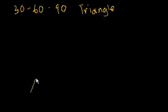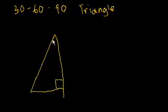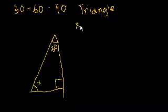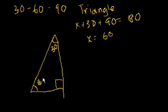Let's say I have a right triangle. That's the right angle. If I tell you that this is a 30-degree angle, we know the angles in a triangle must add up to 180. So if this is 30 and this is 90, the remaining angle x satisfies x plus 30 plus 90 equals 180, which means x equals 60. So this angle is 60 degrees, and that's why it's called a 30-60-90 triangle — those are the three angles.